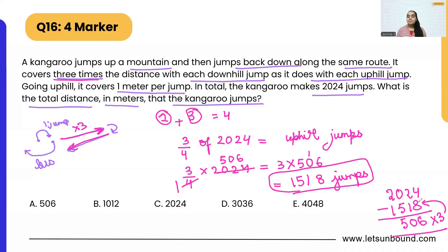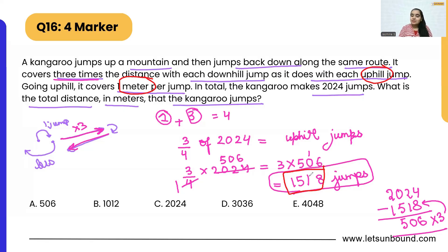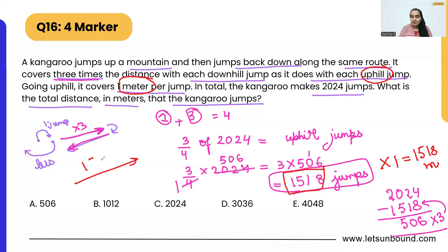Now we know that with each uphill jump the kangaroo covers one meter. So 1518 uphill jumps cover 1518 meters. Since the route is the same, the distance going downhill is also 1518 meters — the total path length doesn't change.